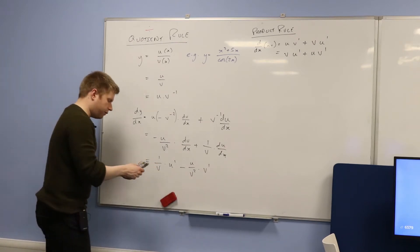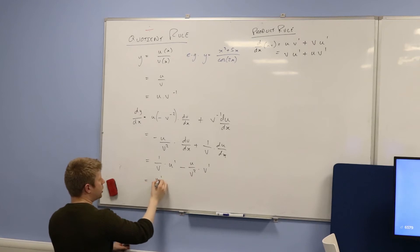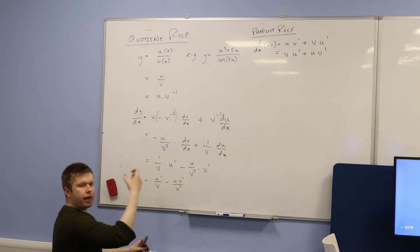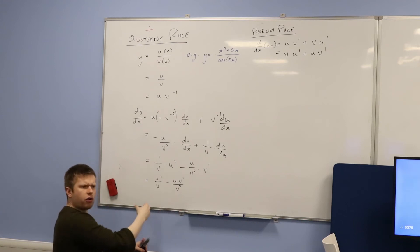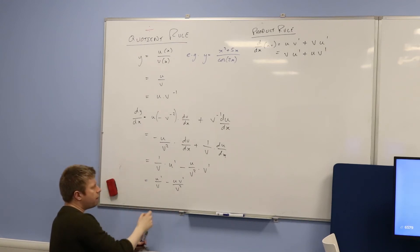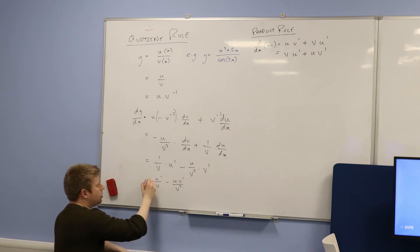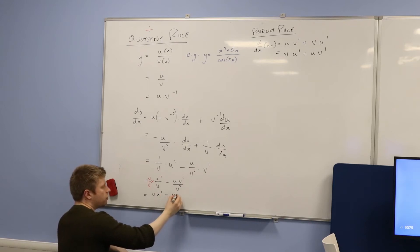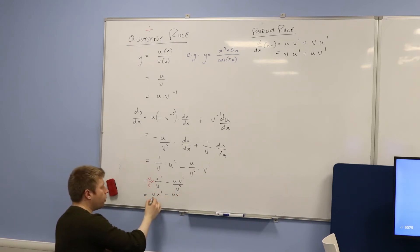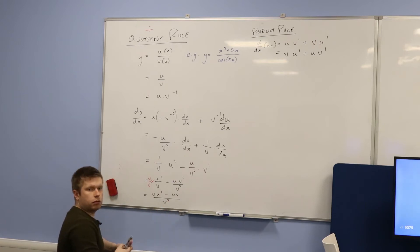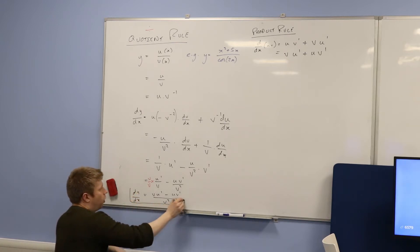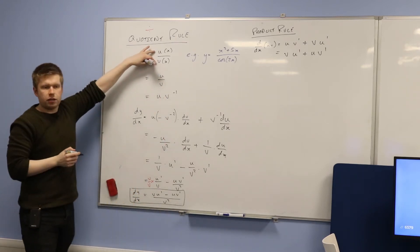So effectively what I have now is u dash over v, minus u v dash over v squared. I want to write this as one fraction. So I do that by getting a v squared on the denominator, which I could easily do by multiplying the first term by v over v. In other words, I have v times u dash, minus u times v dash, and the whole thing is over v squared.